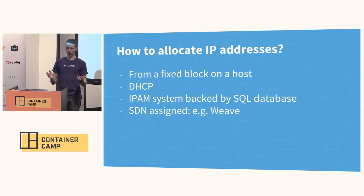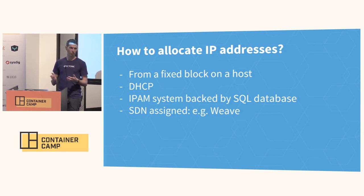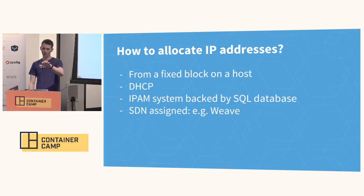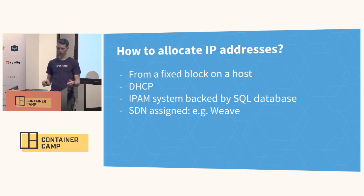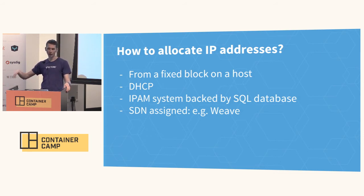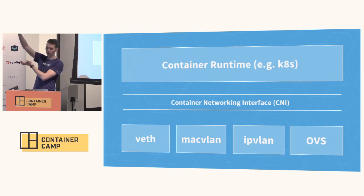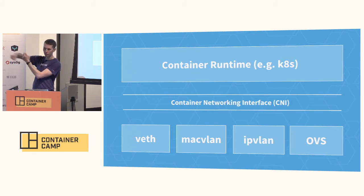There are a number of questions that you have to figure out in order to implement this sort of connectivity. You need to figure out how you're actually going to be allocating the IP addresses for these containers — whether it's coming from local information like this host has this entire subnet, maybe it's coming from DHCP, maybe from some IPAM system backed by a database, or it's set up by your actual SDN thing like Weave or Calico or whatever. You can think of CNI logically as an adapter between the container runtime — maybe it's Kubernetes, maybe it's Rocket — and then the actual technologies used inside the Linux kernel to set up networking and routing for these L3 addresses.